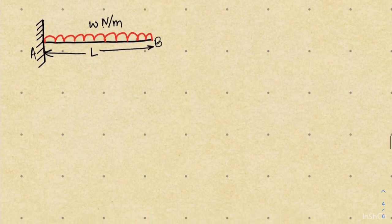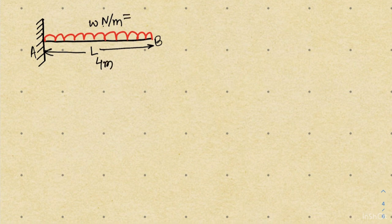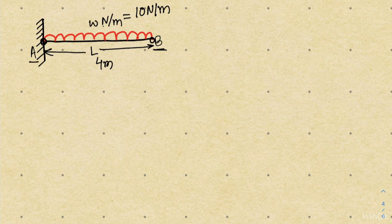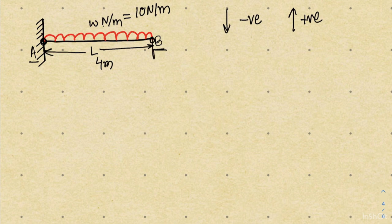Our problem statement has a beam with an intensity of load of 10 newton per meter. I am interested to find the shear force at point A, shear force at point B, as well as the variation of shear force while moving from point B to point A. Let me remind you our sign convention: in case of a downward load the shear force will be considered negative, and for an upward load it will be positive. We start making our shear force diagram from the extreme right and then move towards the left side.